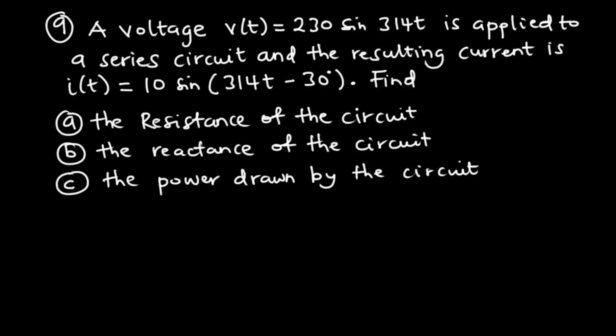Notice that this circuit is an AC circuit, and the instantaneous current I of T is lagging the voltage by 30 degrees. This circuit is an RL circuit because in an RL circuit, the current lags the voltage by an angle between 0 and 90 degrees. So because the instantaneous current is lagging the voltage by 30 degrees, we have an RL series circuit.